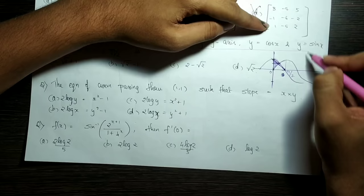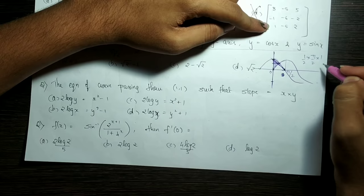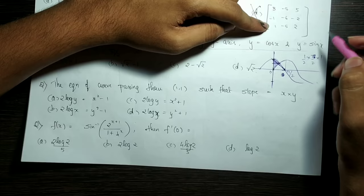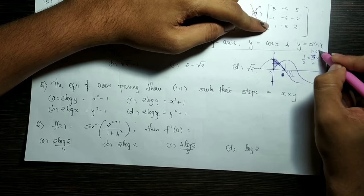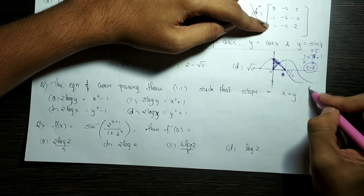Triangle area is half into base into height. Half into base into π/2 into height. Height is 1. π is equal to 3.14. 3/2 is equal to 1.5. 1.6 is equal to 0.8. Triangle area is 0.8. This area is almost half. Half of 0.8 is equal to 0.4. So these options give 0.4. That is our answer.